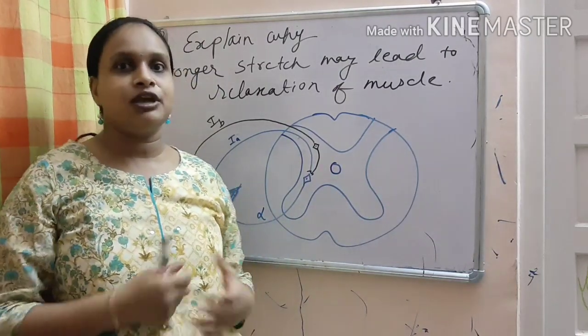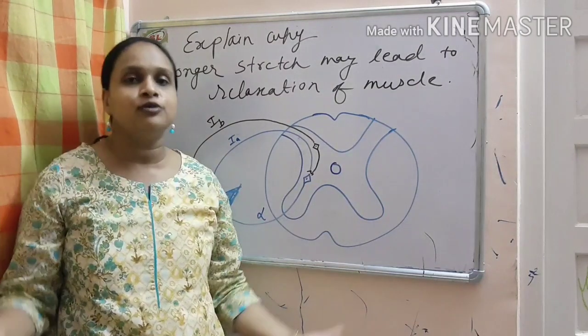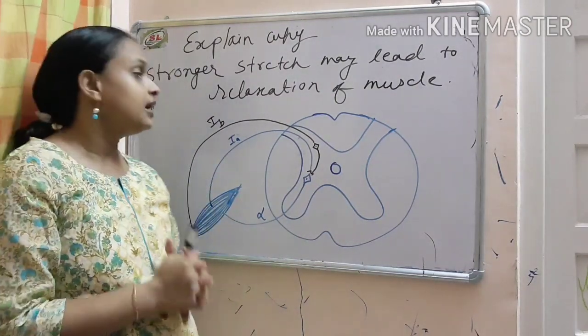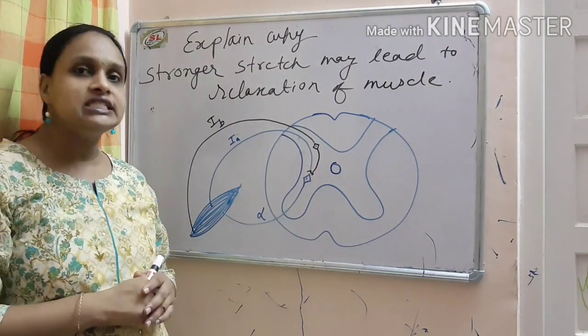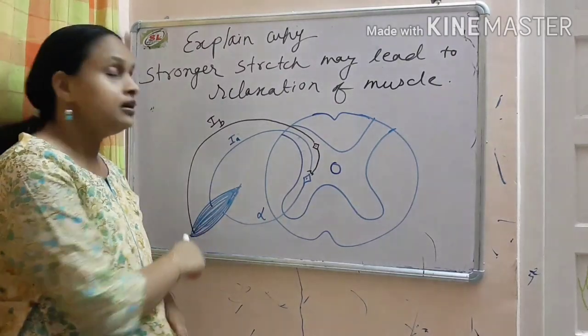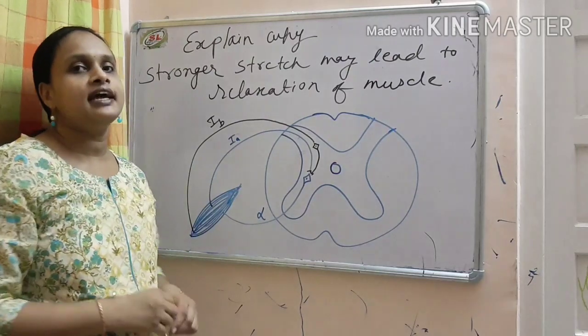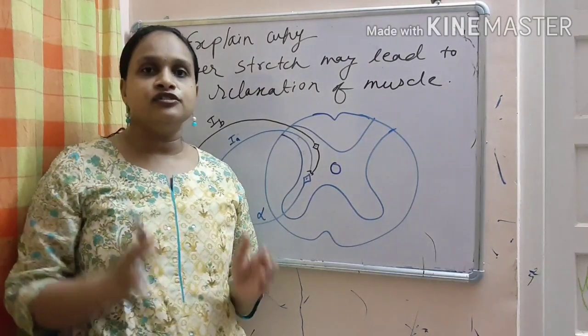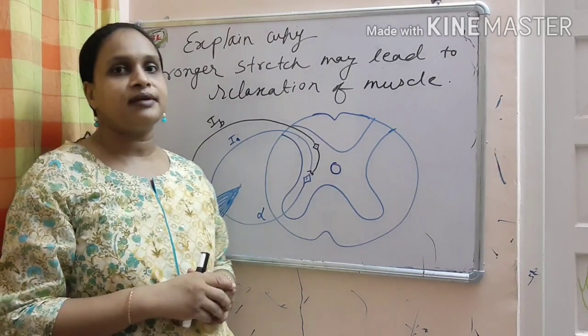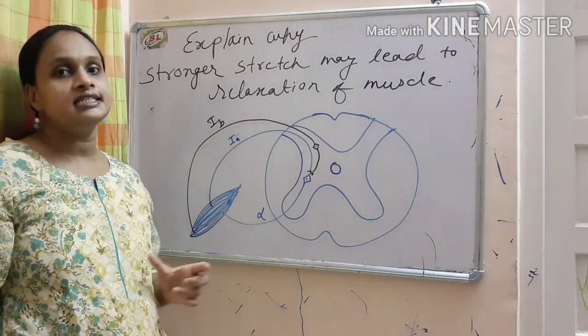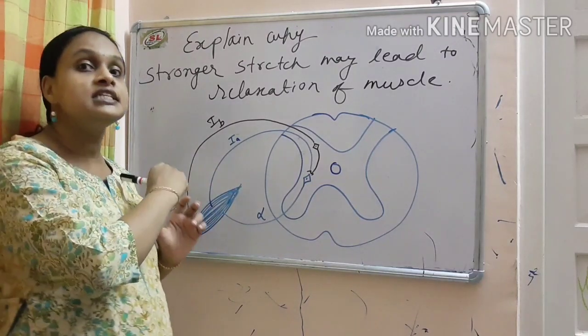It gets relaxed because of the inverse stretch reflex. Inverse stretch reflex is just opposite to the stretch reflex. And in this, the sensory organ is golgi tendon organ which are in the series of the muscle, not parallel. For stretch reflex, the intrafusal fiber or muscle spindles were in parallel to the extrafusal fiber. But in inverse stretch reflex, the sensory receptors which are golgi tendon organ are in the series of the muscle.